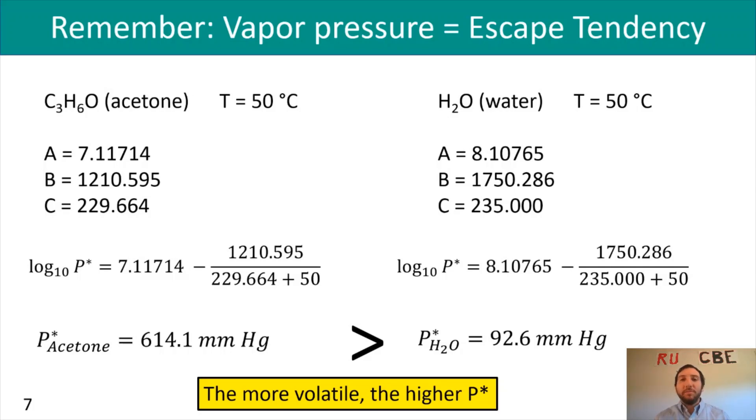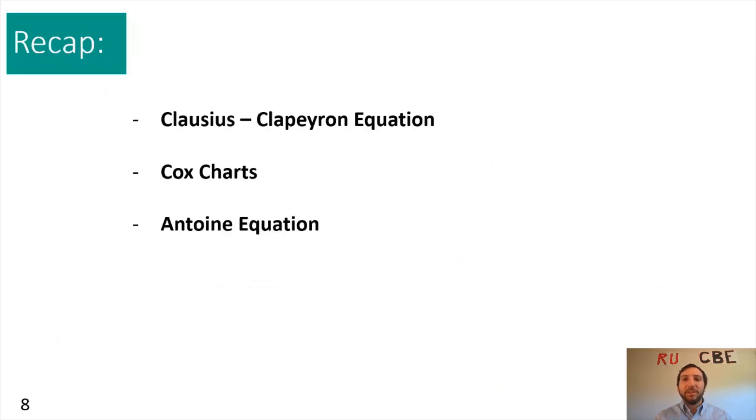Something to remember: the more volatile the compound, the higher the P*. Hopefully you'll remember this with water and acetone, two things you often see. That wraps up part two, where we talked about the Clausius-Clapeyron equation, Cox charts, and the Antoine equation. Thanks for tuning in, and I'll see you soon.